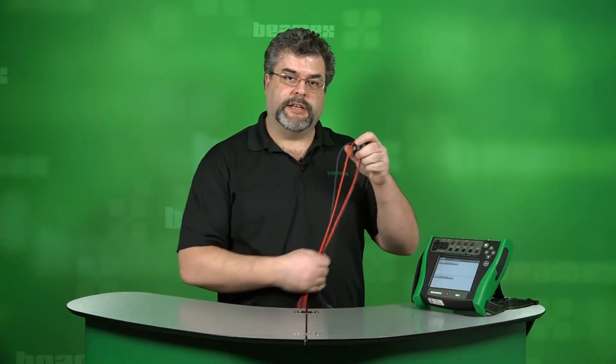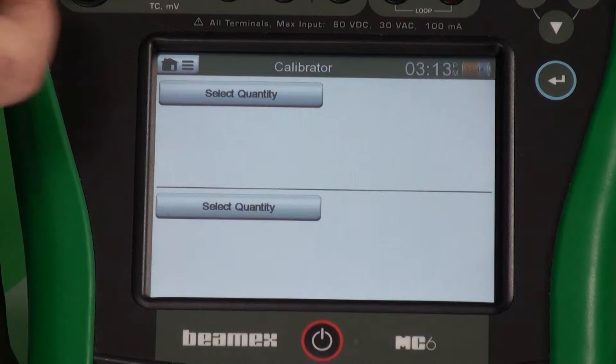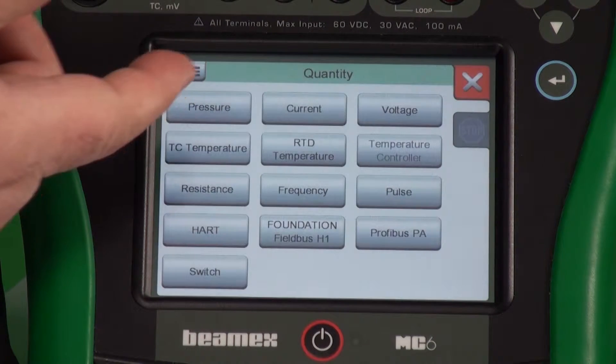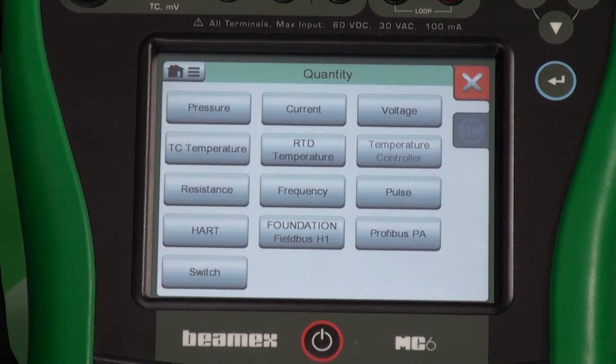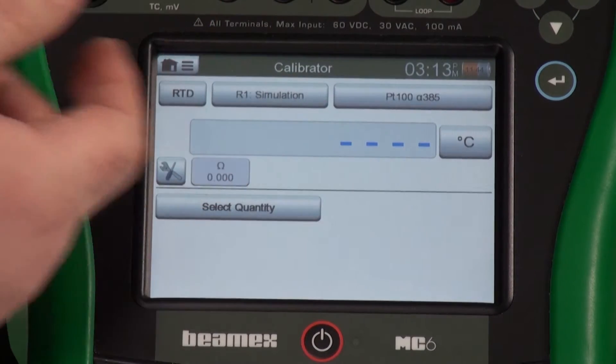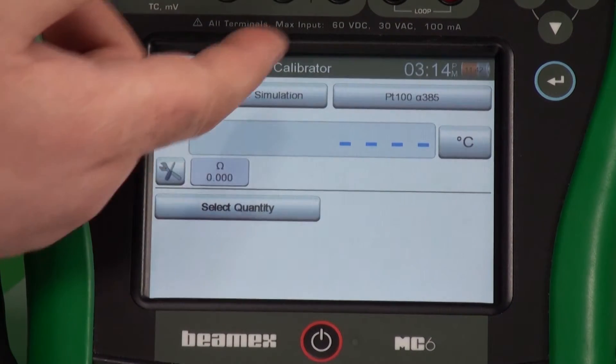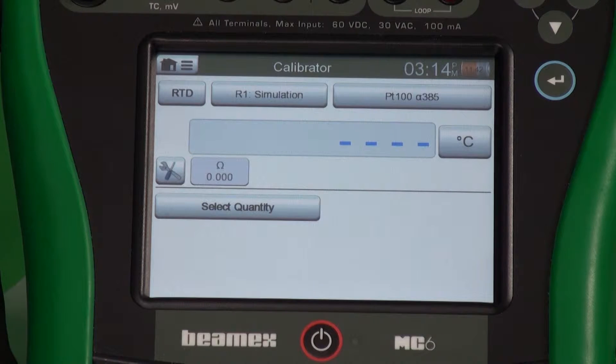Let's take this as an example. I've got an RTD temperature transmitter, so I need to simulate temperature. I tend to put the input on the top, so we'll select quantity. My input in this case is RTD temperature. Now I'm simulating instead of measuring, so I do want simulate, and my type is a Platinum 100 385, so that's perfect.